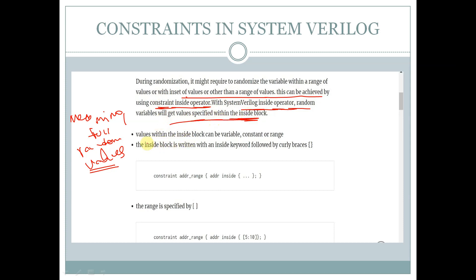This is a constraint, with a constraint name followed by curly braces. Inside the braces, this is the variable we are randomizing, and using the keyword inside we can specify what set of values or what range of values we need this variable to be randomized to. With this inside keyword we can generate meaningful values and the set of values we want.